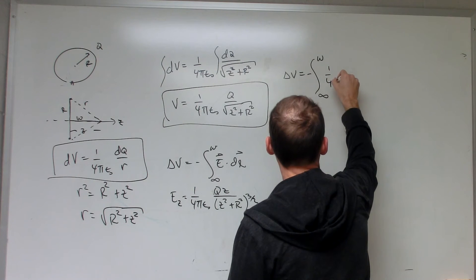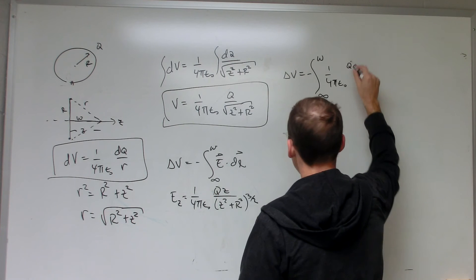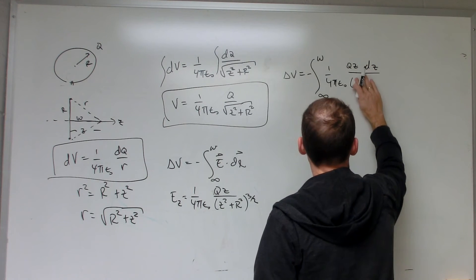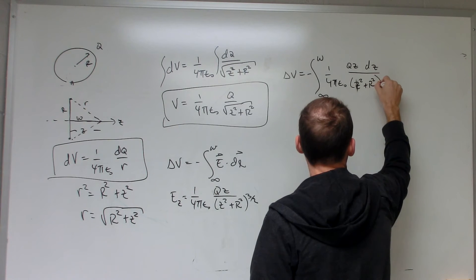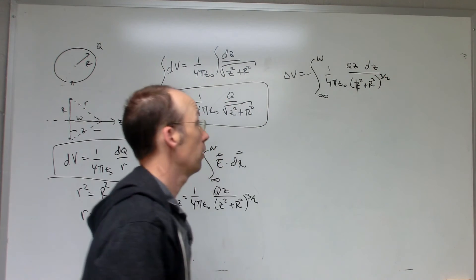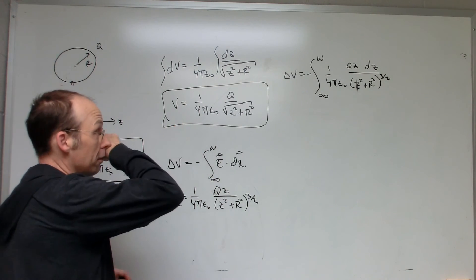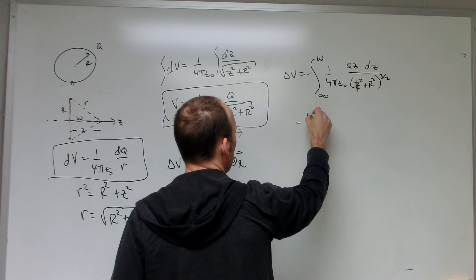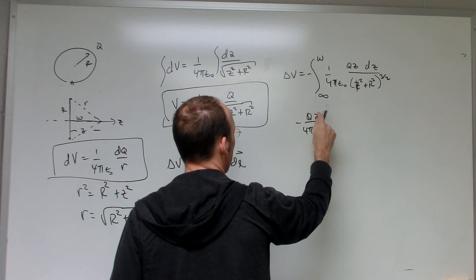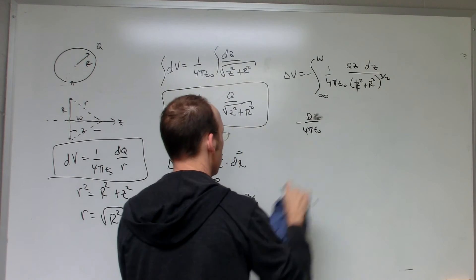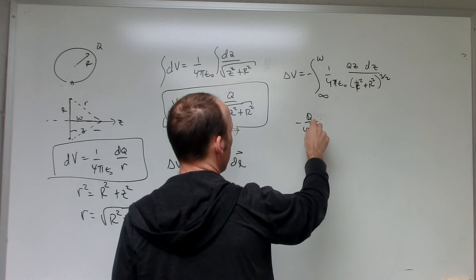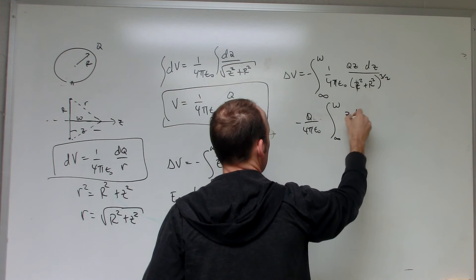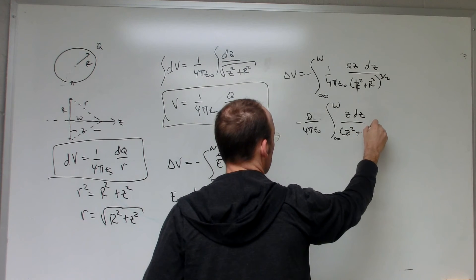So then I get 1 over 4π epsilon not, Qz, and then times dl, the E dot dl is going to be dz, over z squared plus R squared to the three halves. So that's it. All I have to do is evaluate that integral. I should get this. That's how I know if I make a sign error. So let me pull some stuff out. Negative Q over 4π epsilon not, infinity to w, z dz over z squared plus R squared to the three halves.